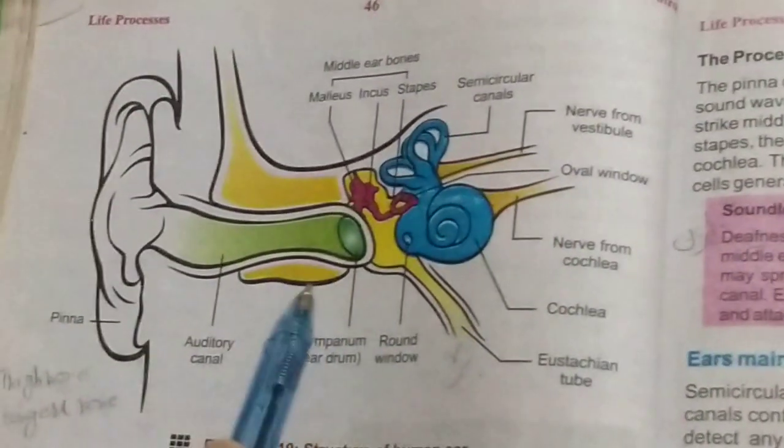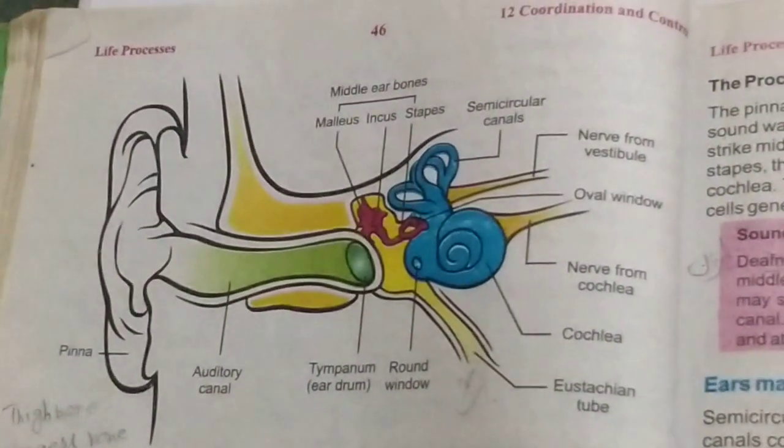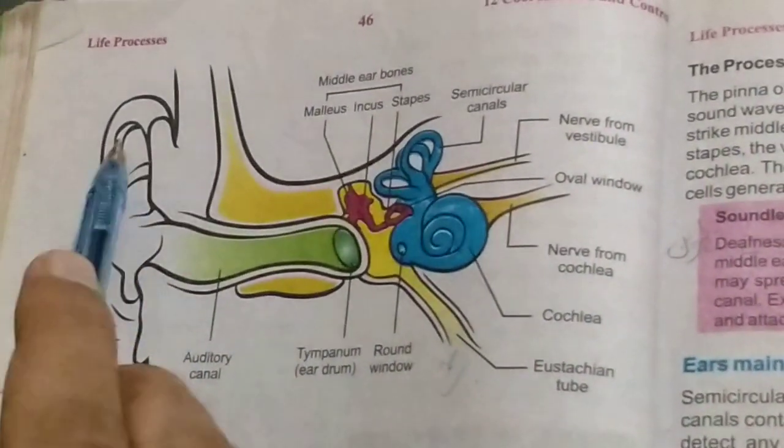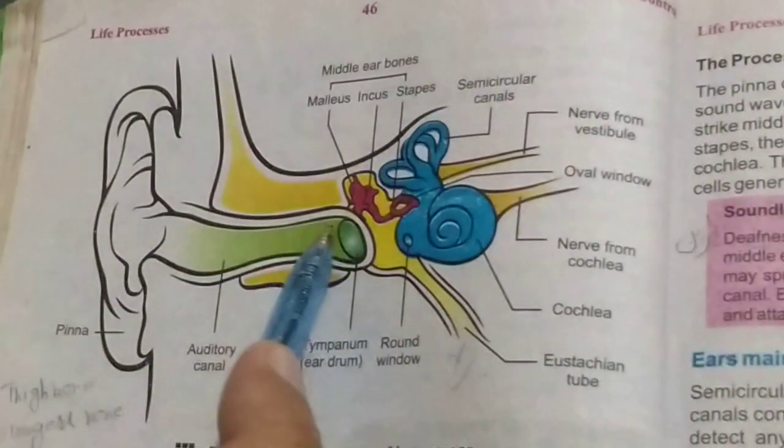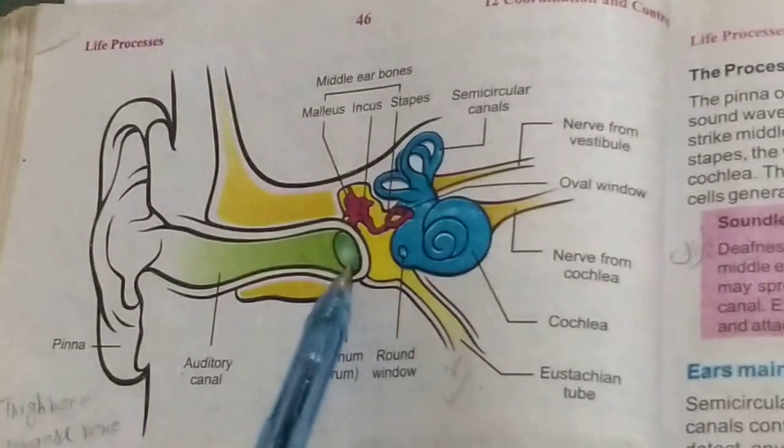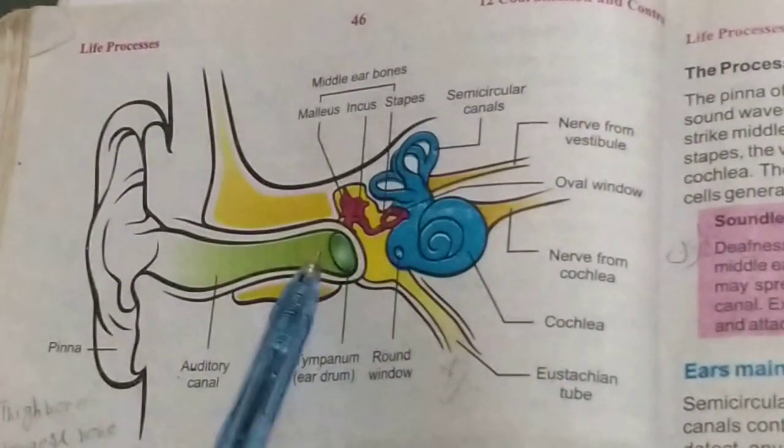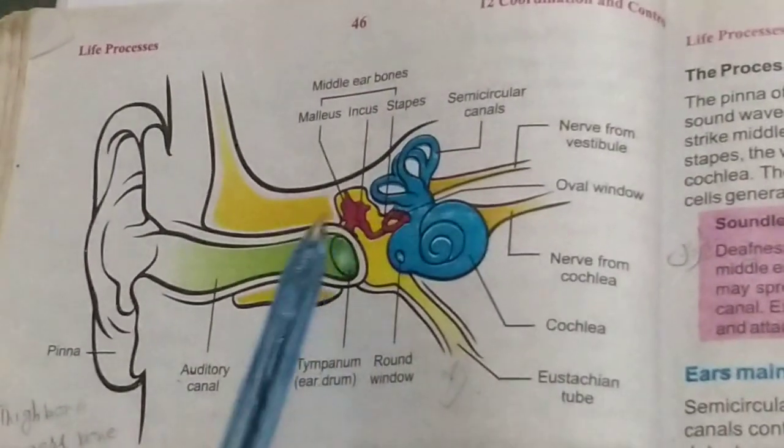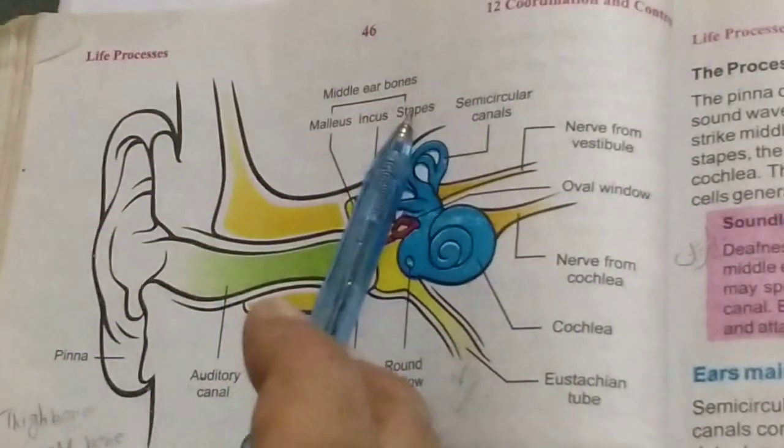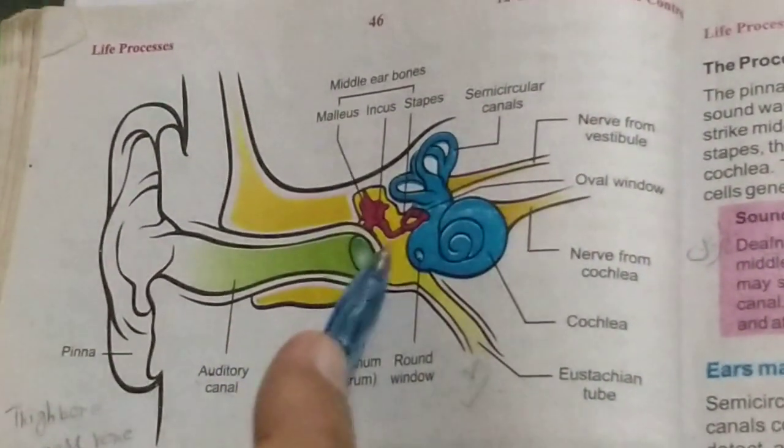In this book, page number 46, if you look at the structure of human ear, this is the structure of human ear. Now, in red, there are three types of middle ear bones: malleus, incus, stapes.